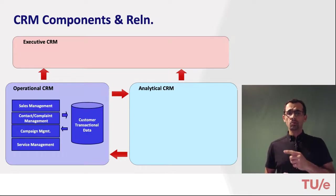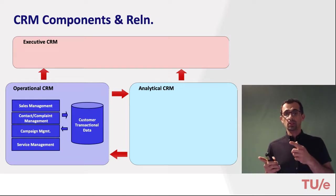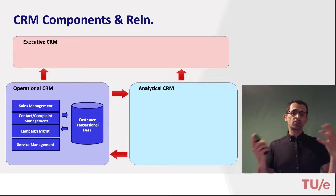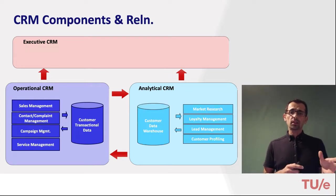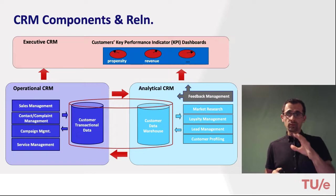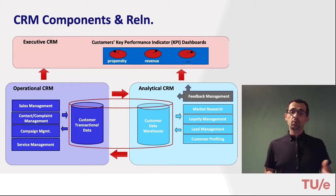In the operational CRM, front and back-end processes such as sales management, complaint management, campaign management, and service management are supported. Data is managed in the customer transactional database, which is logically — but not physically — separated from the larger enterprise database. The analytical CRM supports features like market research, loyalty management, and customer profiling. The executive CRM sub-component is fed by the analytical component through feedback management, providing information on customer-related performance indicators such as trends and revenue.